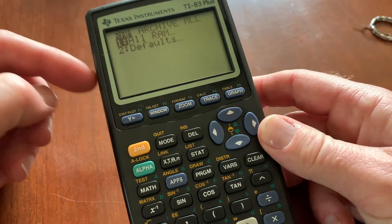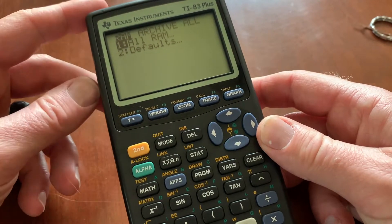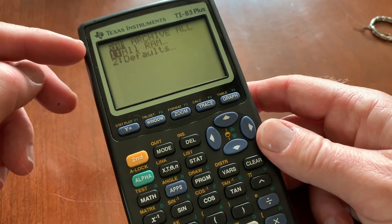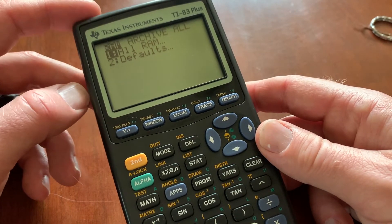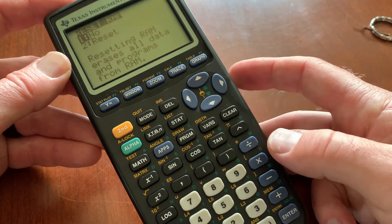And then it gives us a couple options. If you just want to reset all the defaults, you can choose number two. If you really want to completely erase all the background RAM and all the information, you can do number one, which is what we're going to do. So I'm going to hit enter there.